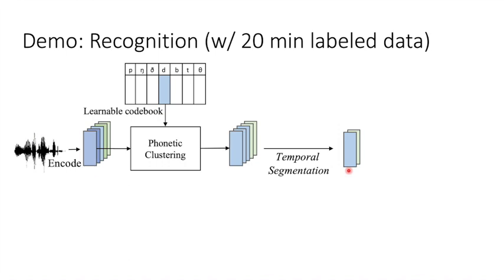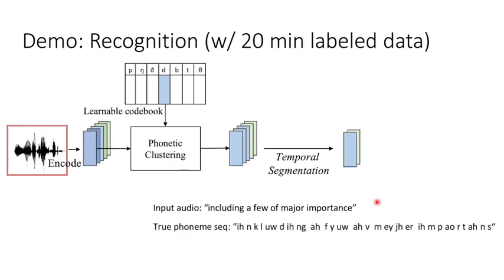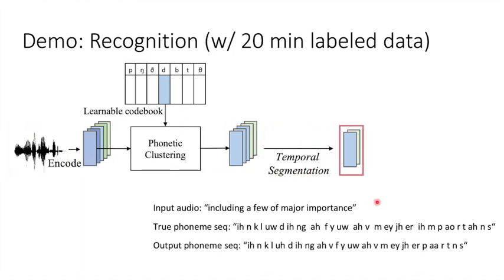For phoneme recognition, we pass an audio of the sentence, including a few of major importance to the model. The true phoneme sequence is as this, and the model output is very similar to the true one.